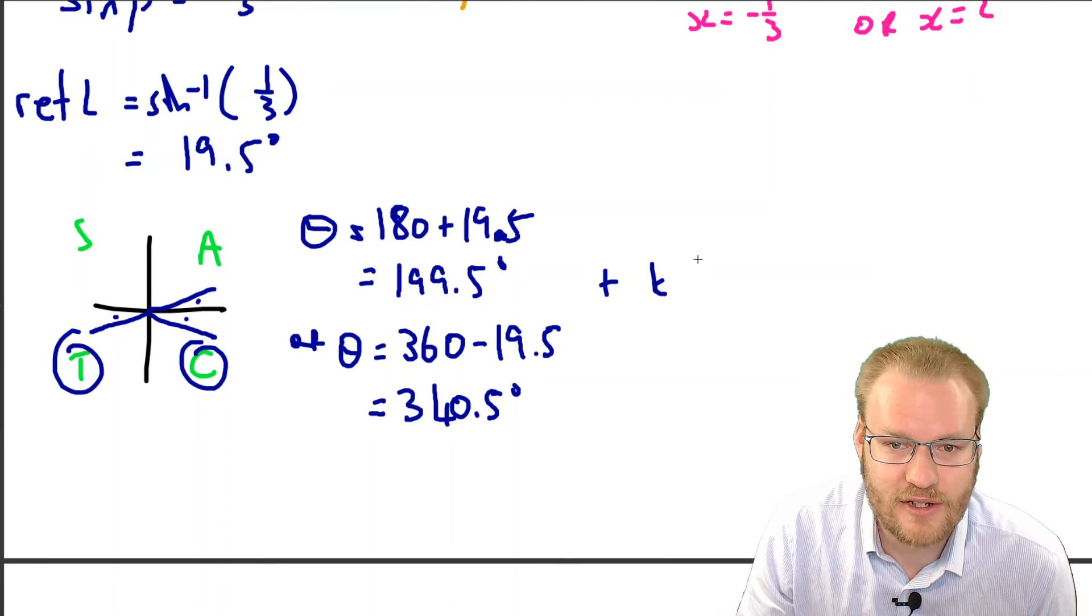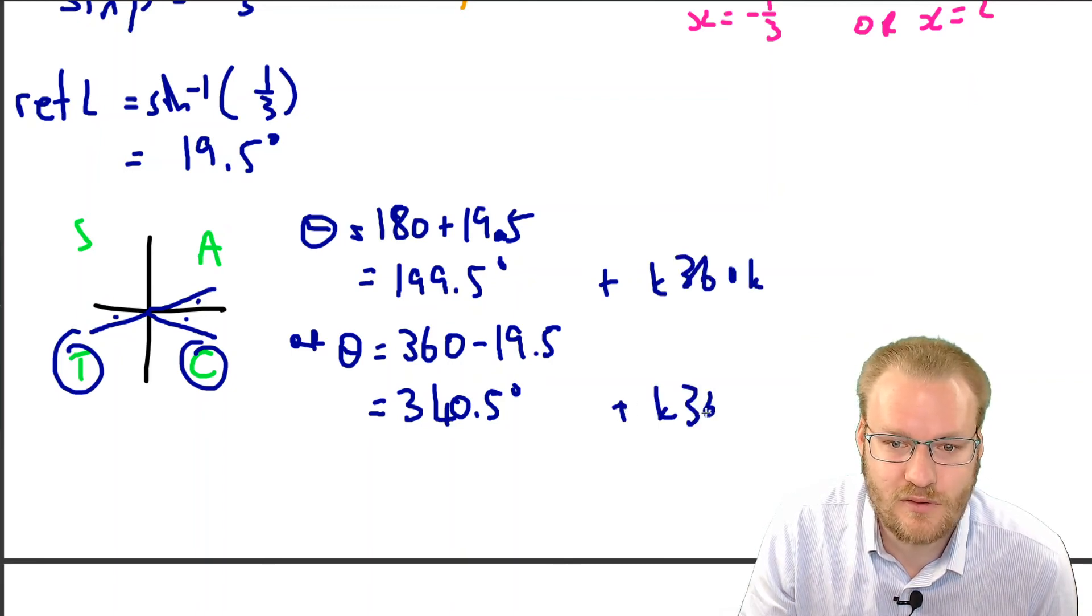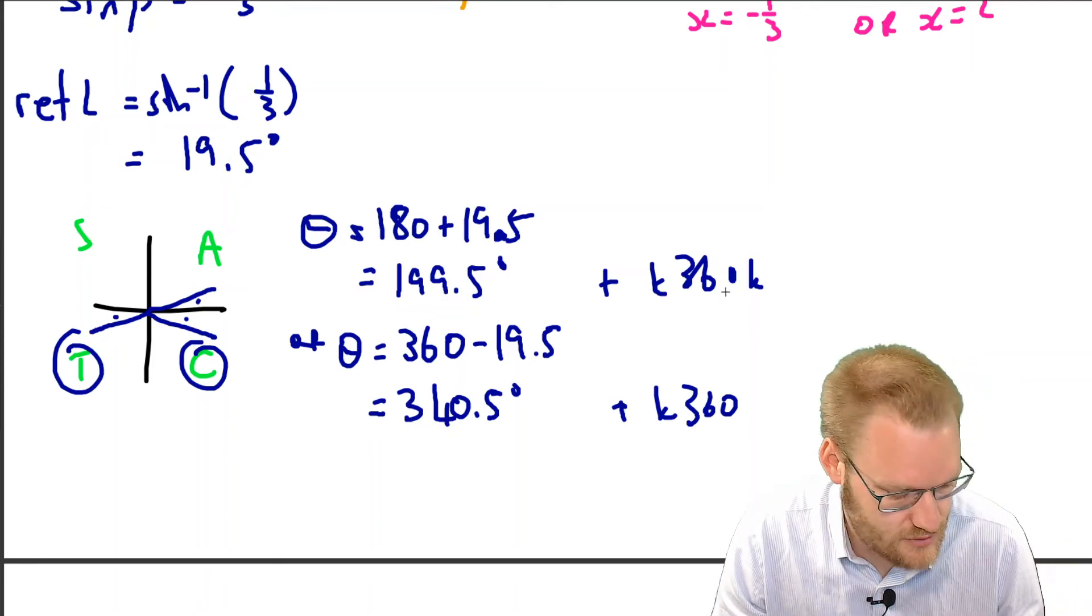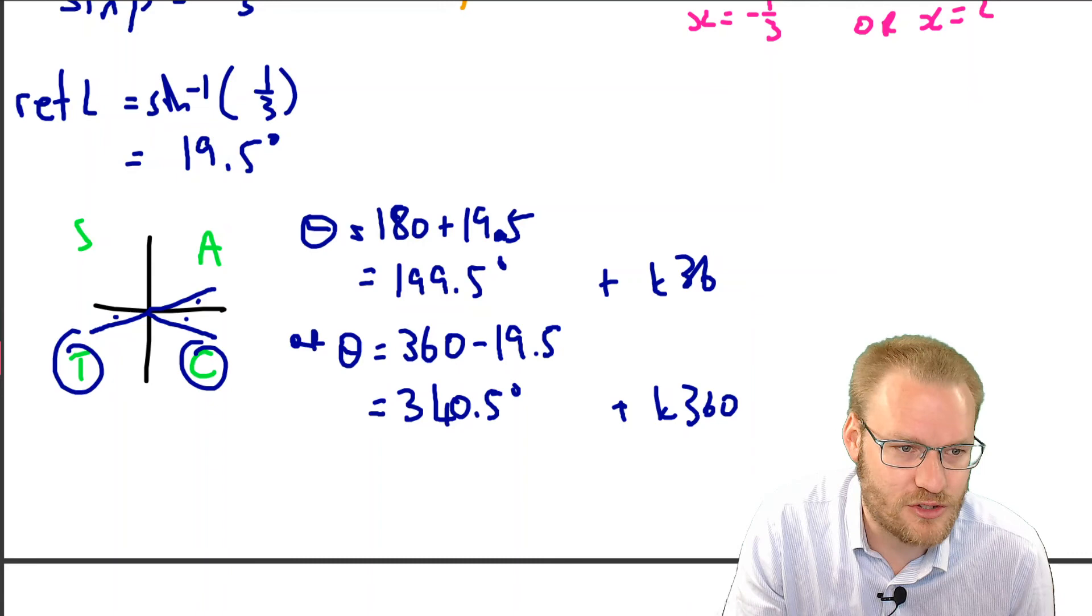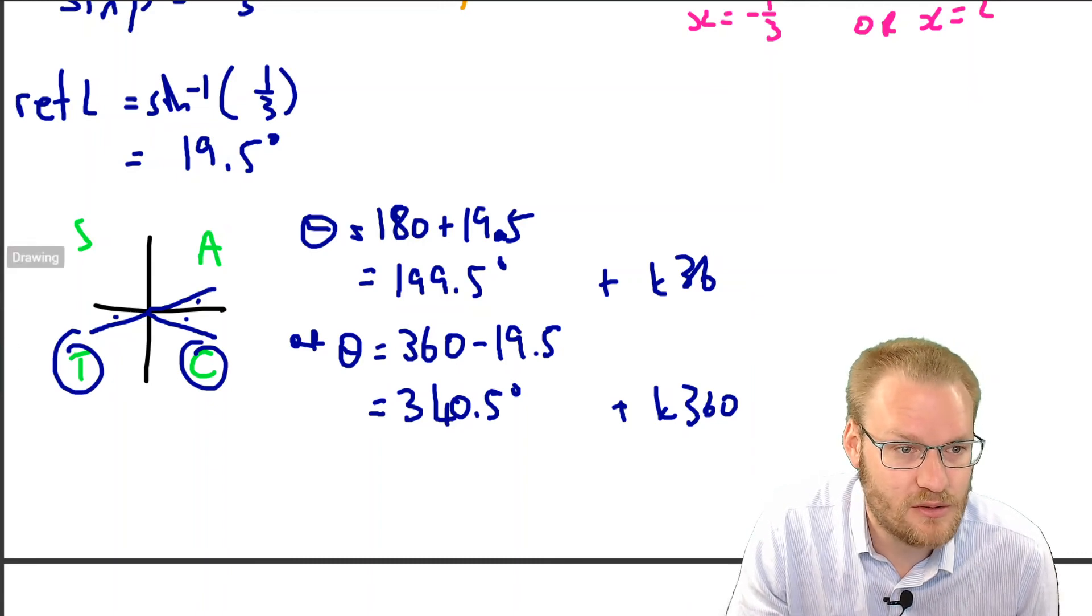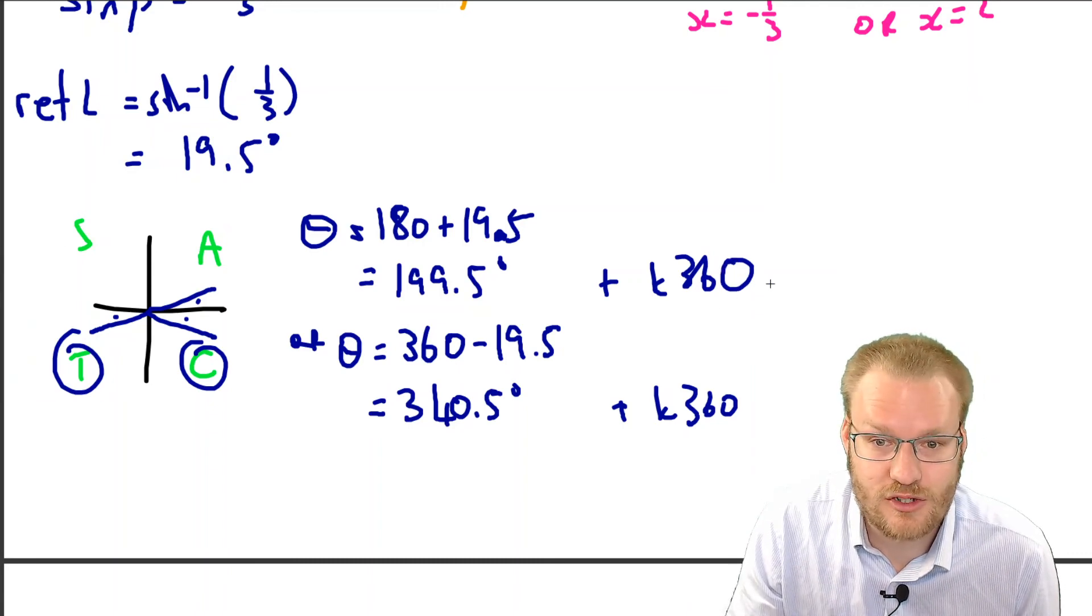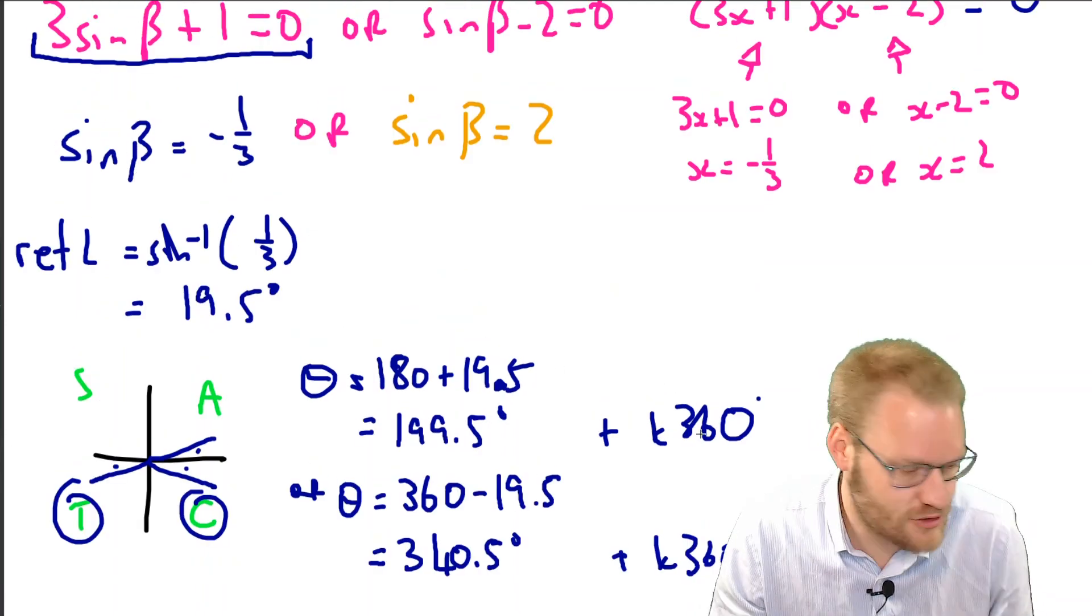And we could add our 360k, but we've done that general solution part before, so there's our one set of solutions.